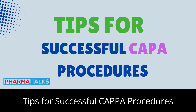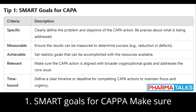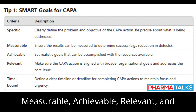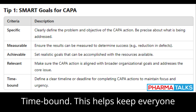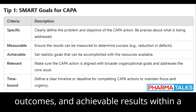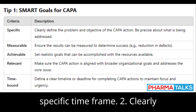Tips for Successful CAPA Procedures. Tip 1: SMART Goals for CAPA. Make sure your CAPA actions are SMART — Specific, Measurable, Achievable, Relevant, and Time-bound. This helps keep everyone focused on clear objectives, measurable outcomes, and achievable results within a specific time frame.